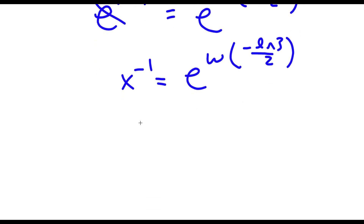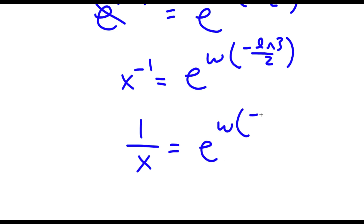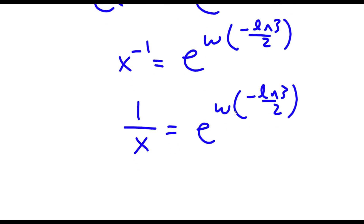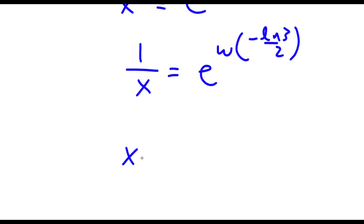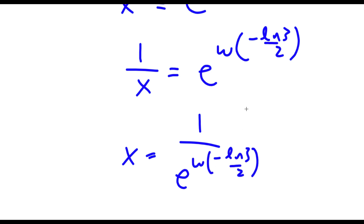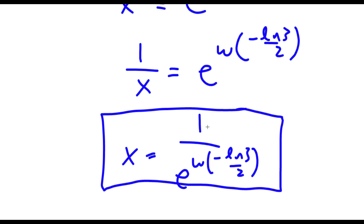Now, x to the power of negative 1 is the same thing as 1 over x. So I have 1 over x is equal to e to the power of W of negative ln 3 over 2. These two can simply switch, so now I have x is equal to 1 over e to the power of W of negative ln 3 over 2. So this is our answer.